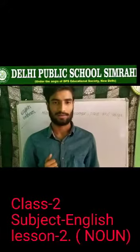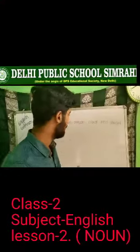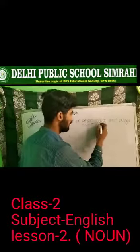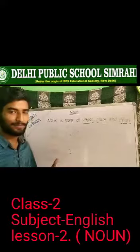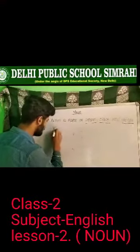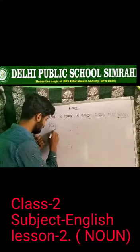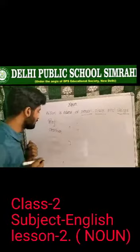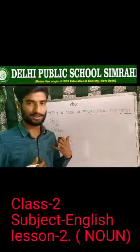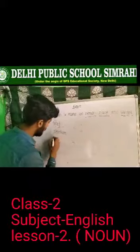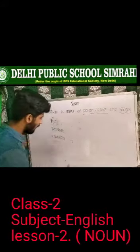So now I'm going to write some examples — names of person, place, and things. My first name is Raj. Raj is my own name and I'm your teacher. Teacher is also a name — teacher is the name of one who teaches you. So Raj is the name of me, and teacher is also a name.